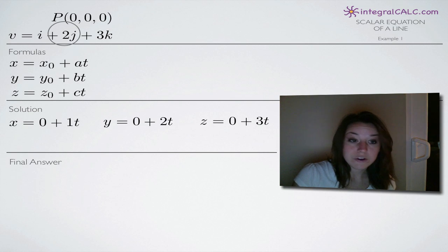We follow that pattern, plugging in zero for y sub zero and two for b. And zero gets plugged in for z sub zero and three for c.